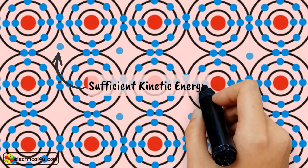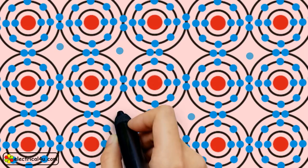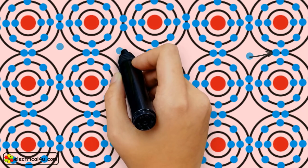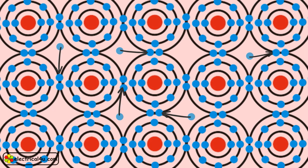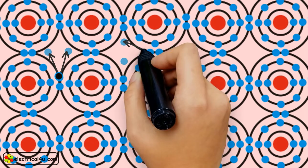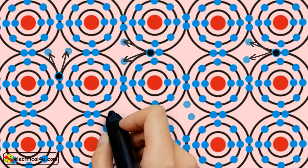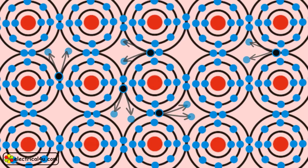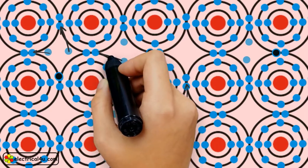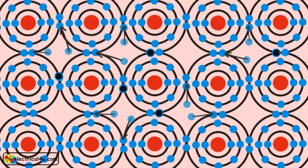After a certain reverse voltage across the junction, the minority carriers get sufficient kinetic energy due to the strong electric field. Free electrons with sufficient kinetic energy collide with stationary ions of the depletion layer and knock out more free electrons. These newly created electrons also get sufficient kinetic energy due to the same electric field, and they create more free electrons by collision cumulatively.